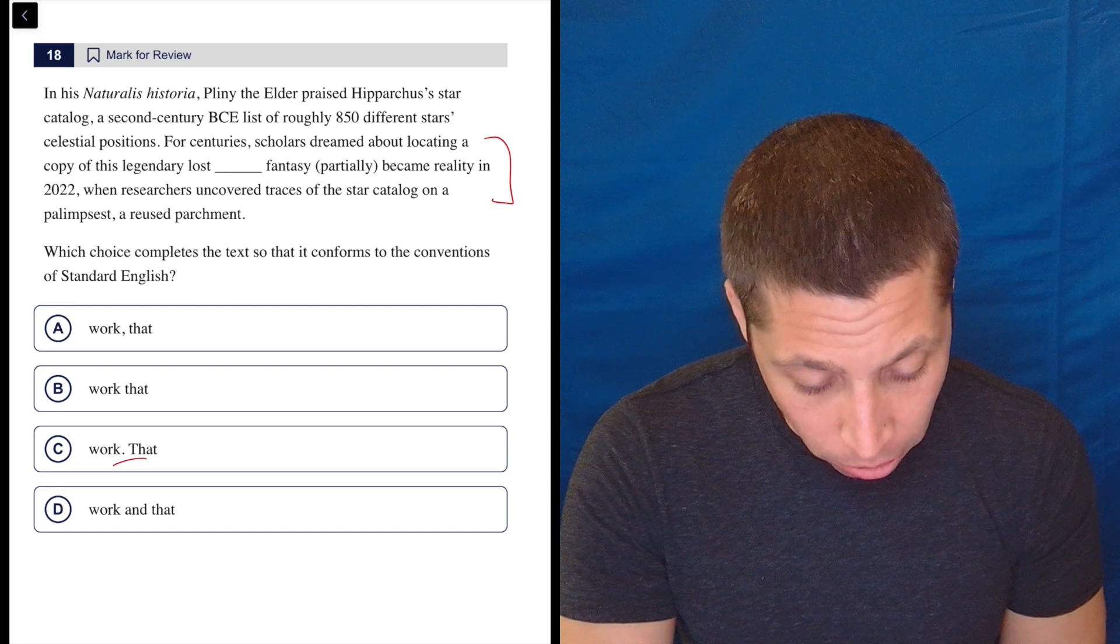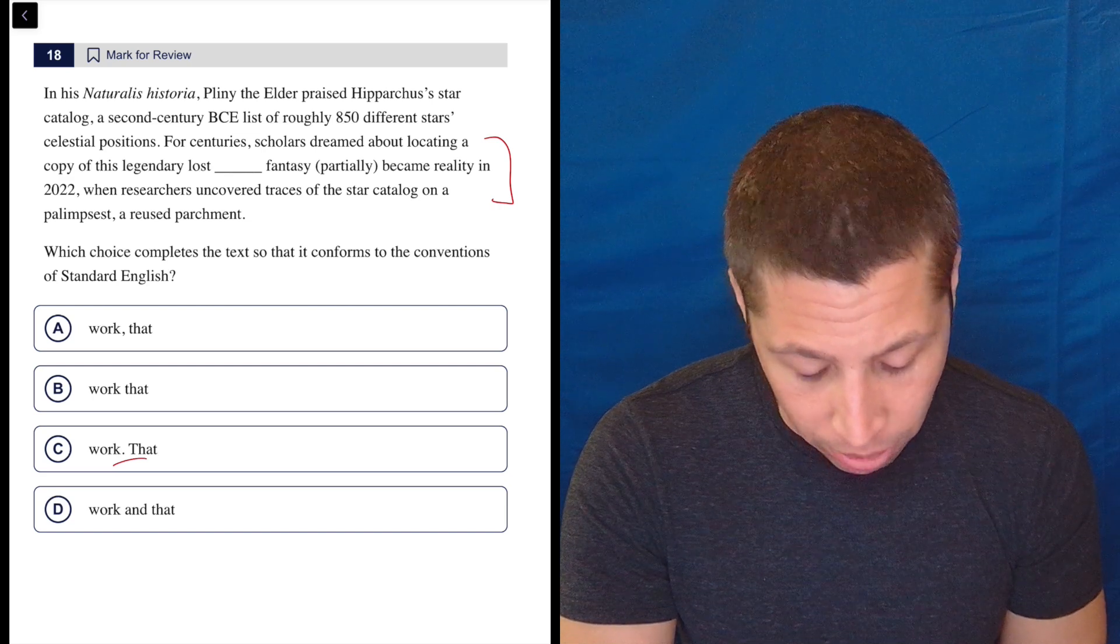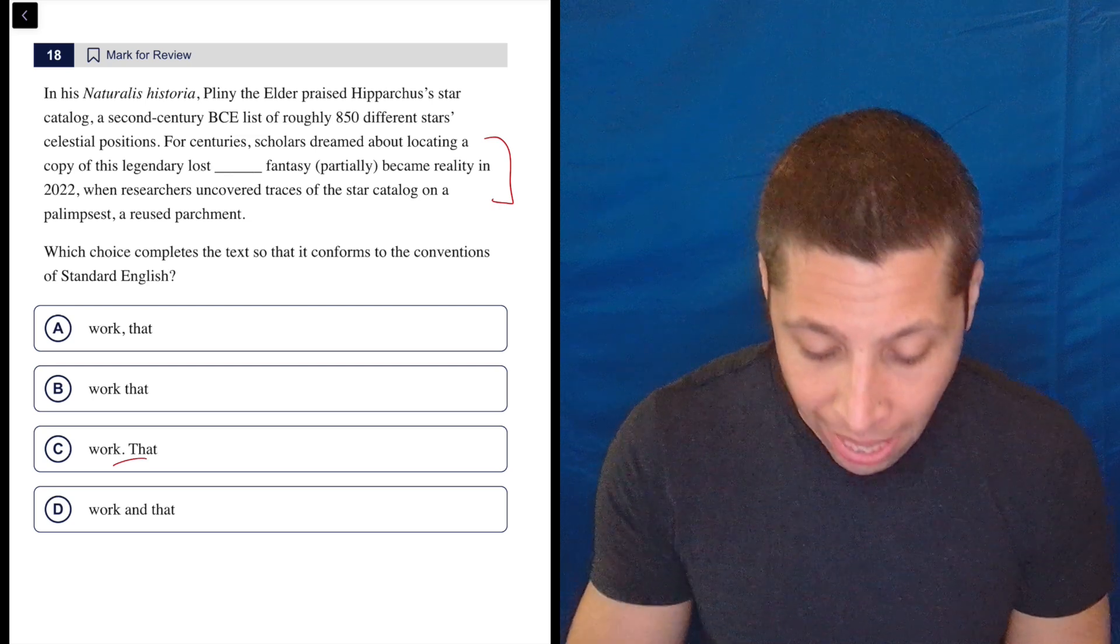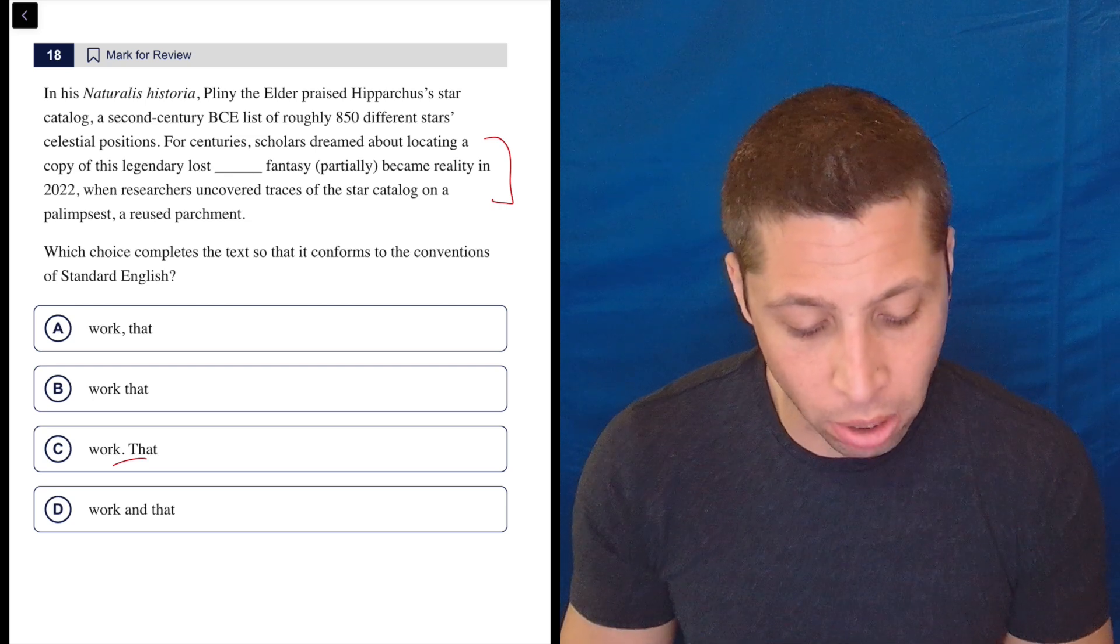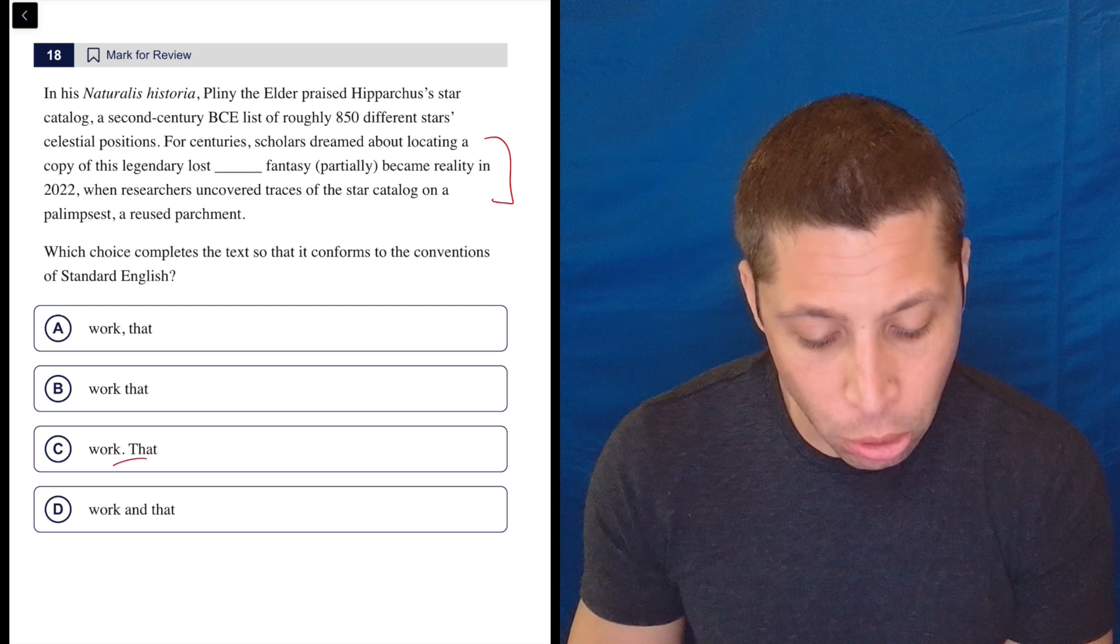That fantasy partially became a reality. Okay, let me start that over. That fantasy became reality in 2022, when researchers uncovered traces of the star catalog on a palimpsest, a reused parchment.